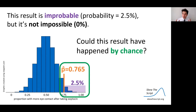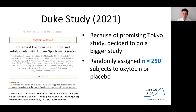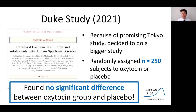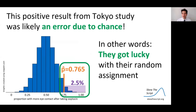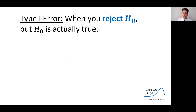However, even though this result has a low p-value, it's not impossible — it could happen by chance assuming the null. So could this result have happened by chance even with oxytocin not being effective? Duke University did a follow-up study in 2021. Because of the promising results from the Tokyo study, they randomly assigned 250 subjects to oxytocin or placebo. It turns out they found no significant difference between the groups. The positive result from the smaller Tokyo study was likely an error due to chance — they got lucky with their random assignment. They made what's called a type 1 error: rejecting the null even though the null was actually true.